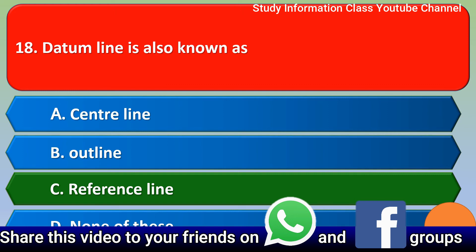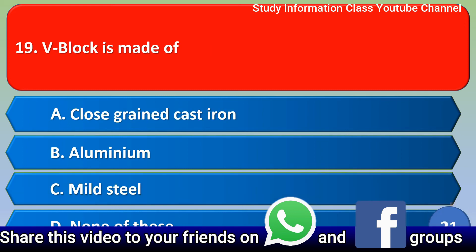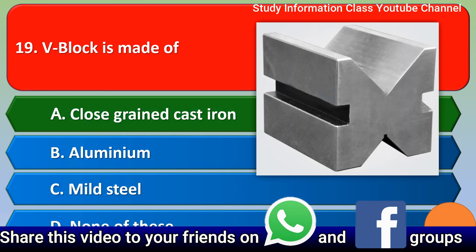Next question: V-block is made of — options: A) close grain cast iron, B) aluminium, C) mild steel, D) none of these. The correct answer is option A, close grain cast iron.